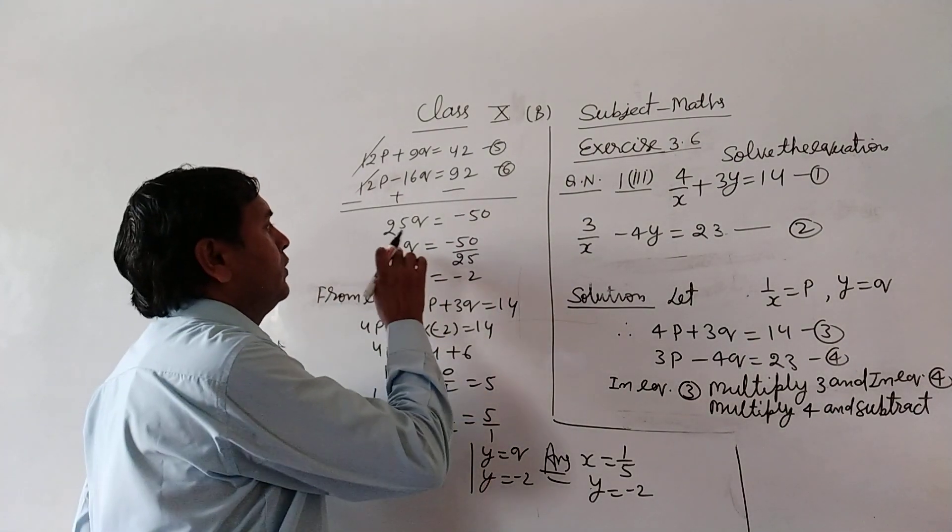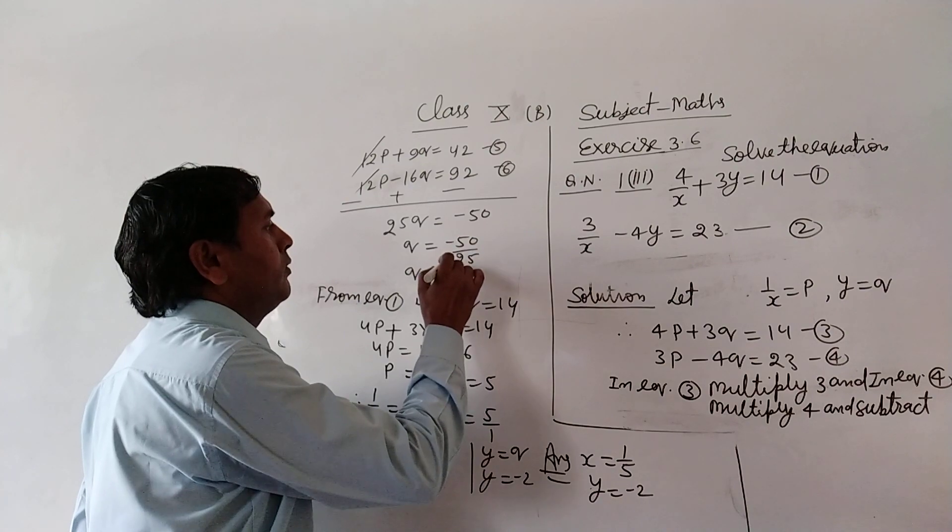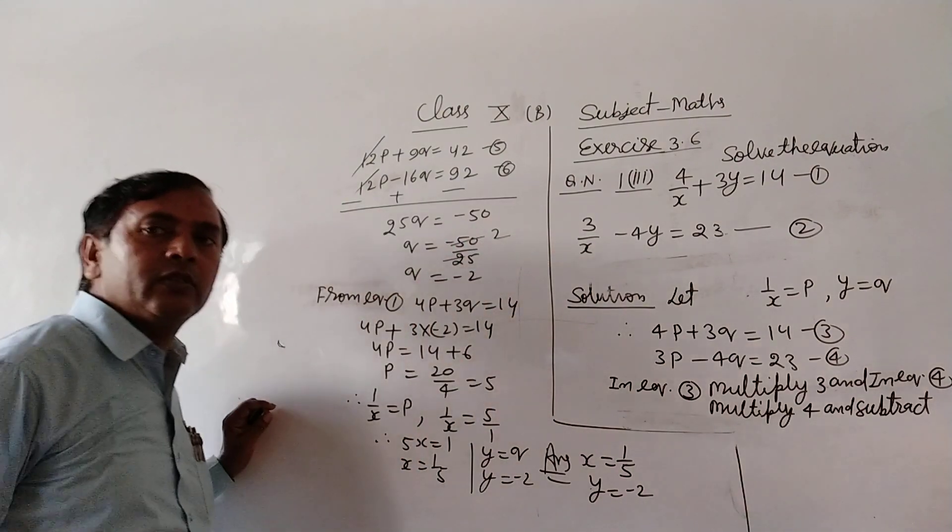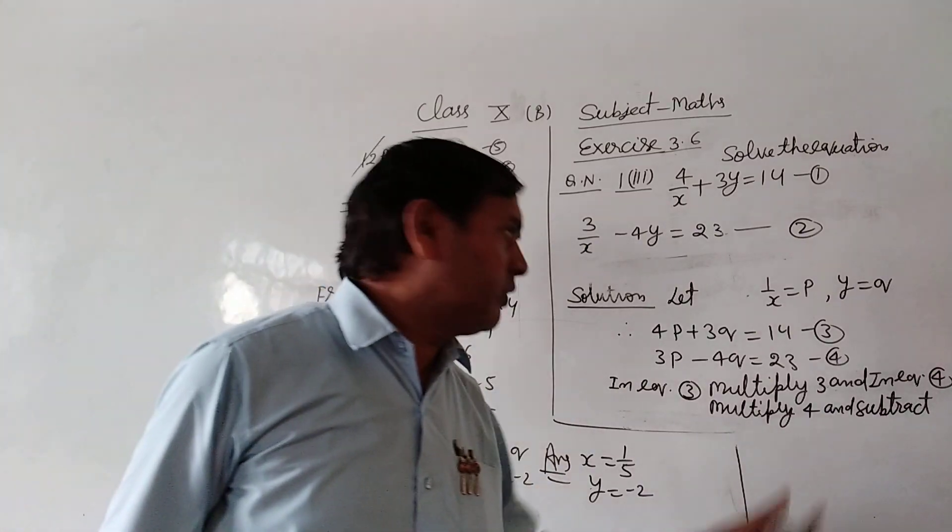So q equals minus 50 upon 25, which divides to minus 2. So q equals minus 2. Put the value of q in equation 3.